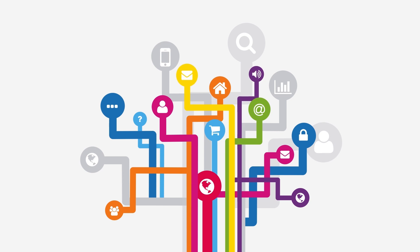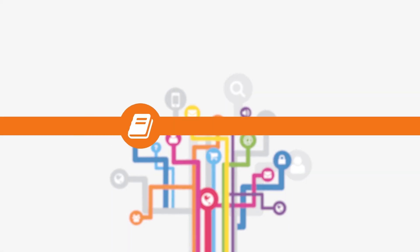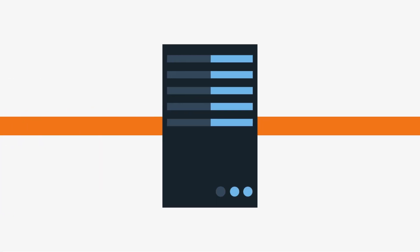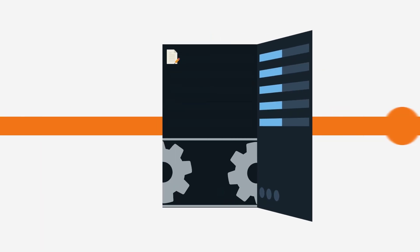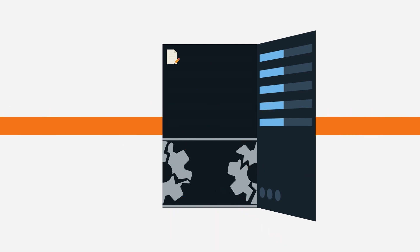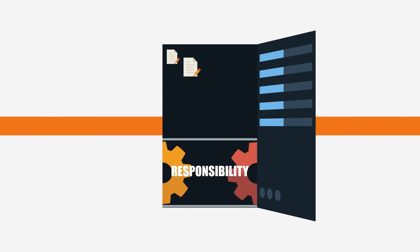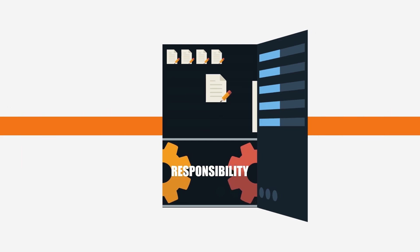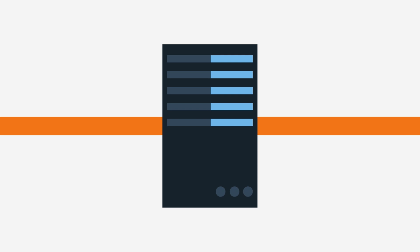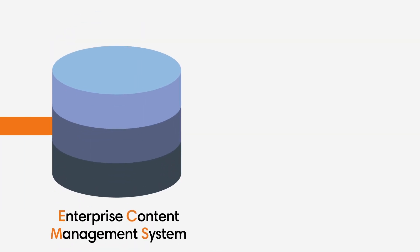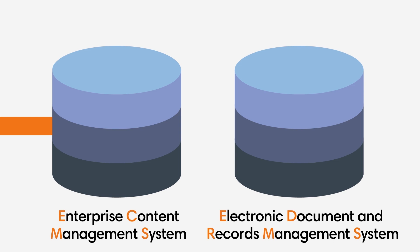With the volume and variety of information in today's digital world, more than ever you're responsible for ensuring the information you create, send or receive as part of your work is available in your organisation's approved systems. In many systems, capturing business information won't happen automatically, so it's important to be aware of your responsibilities when creating and capturing it. For systems not designed to fully manage information, it may be more appropriate to capture it in your enterprise content management system or electronic document and records management system.